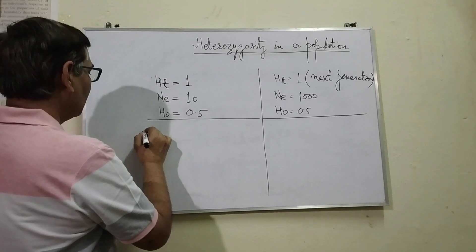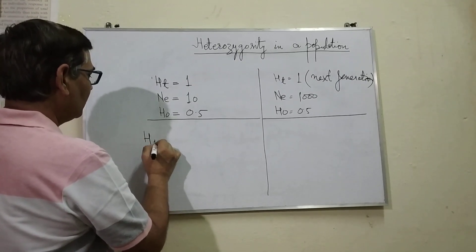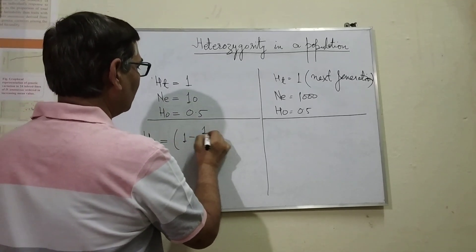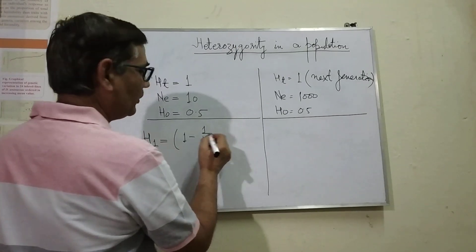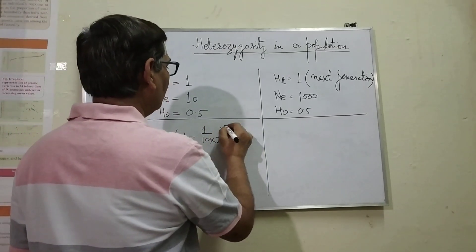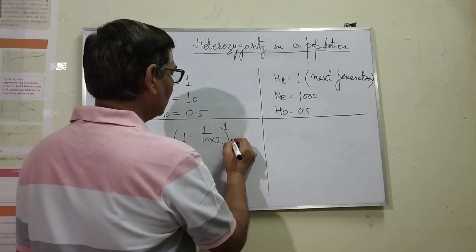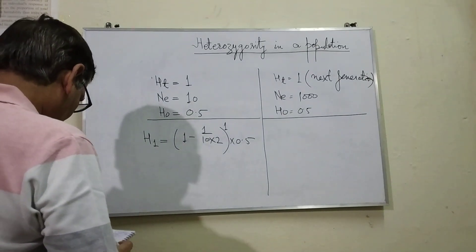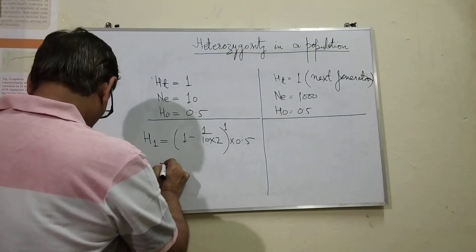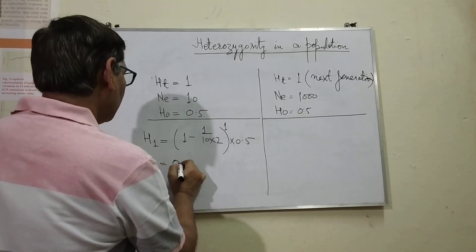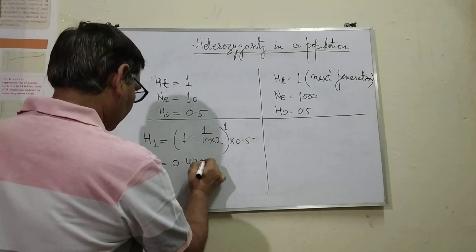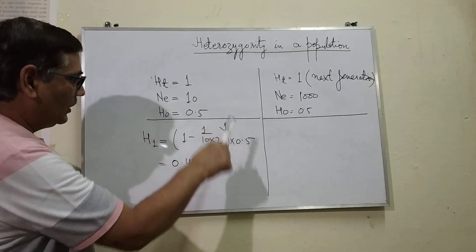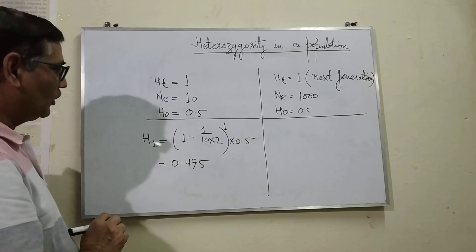I am going to take two separate cases to measure it. Now, we will see Ht — that is heterozygotes in the first generation. That will be equal to 1 minus 1 divided by (10 × 2), to the power 1, into 0.5. When you solve this, you will find the value coming as 0.475.